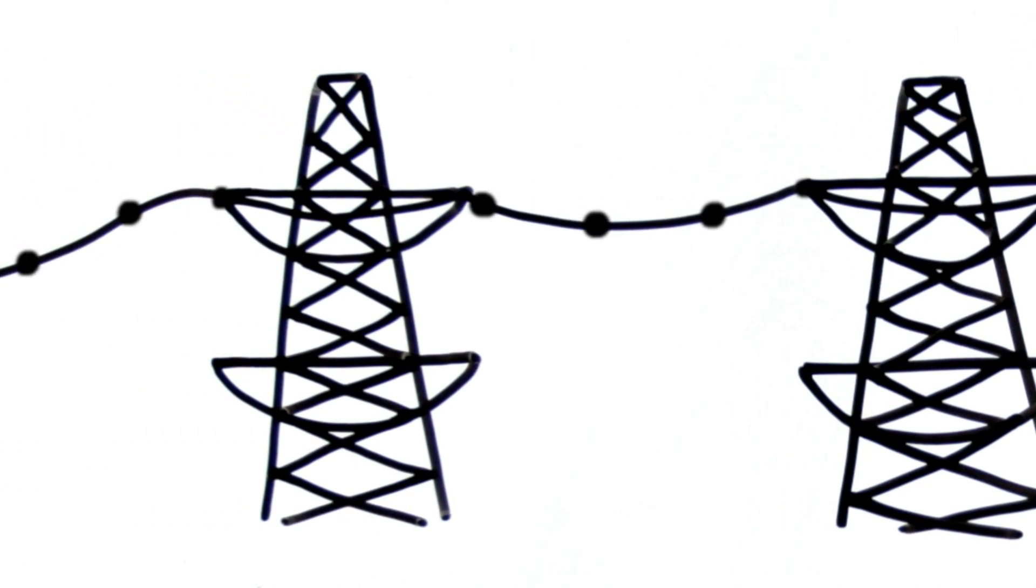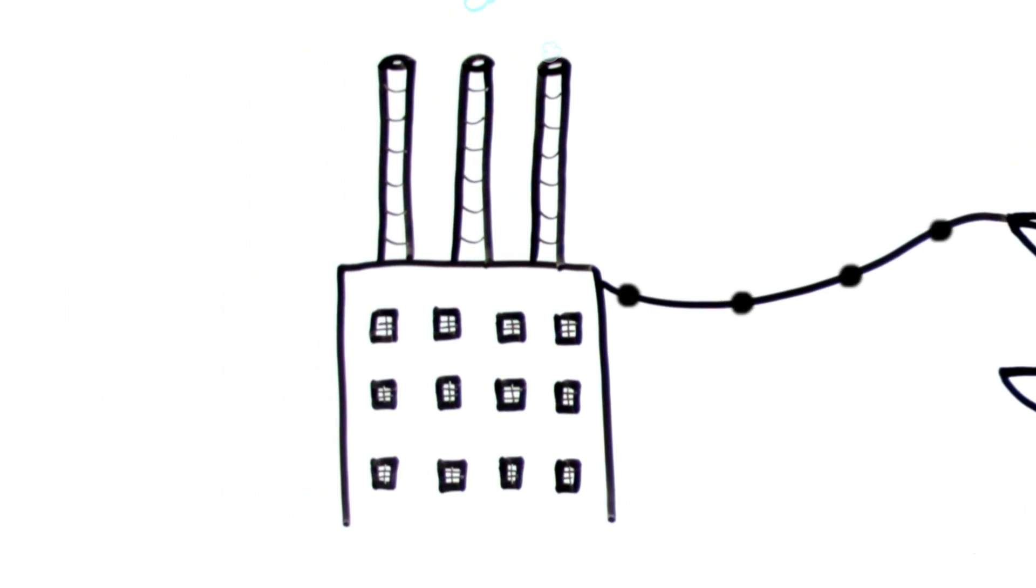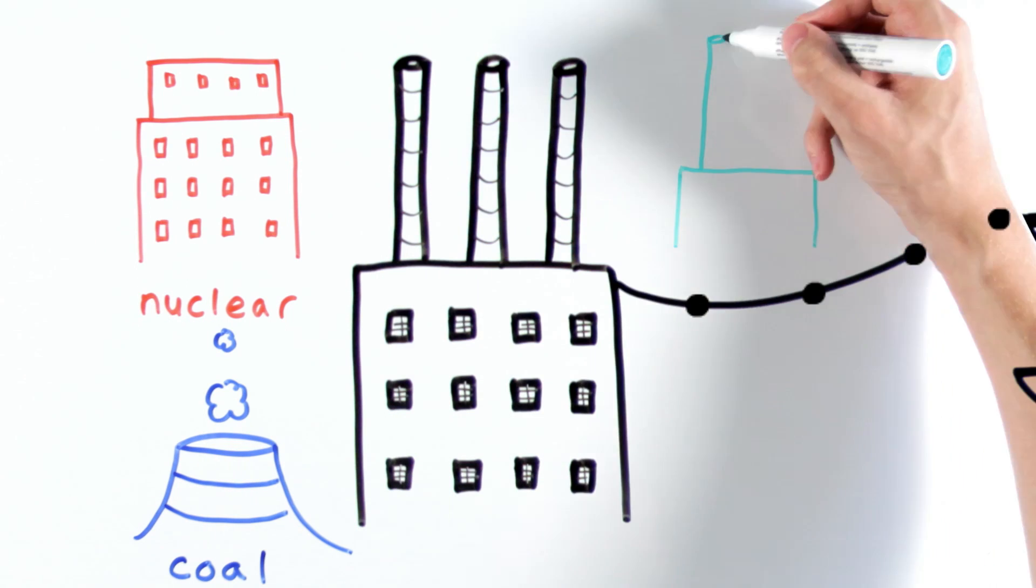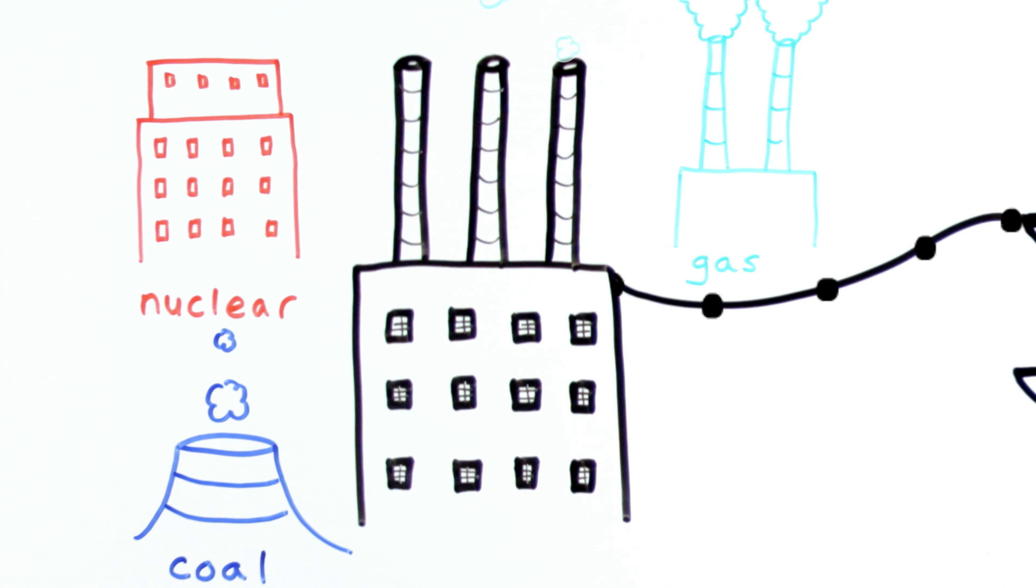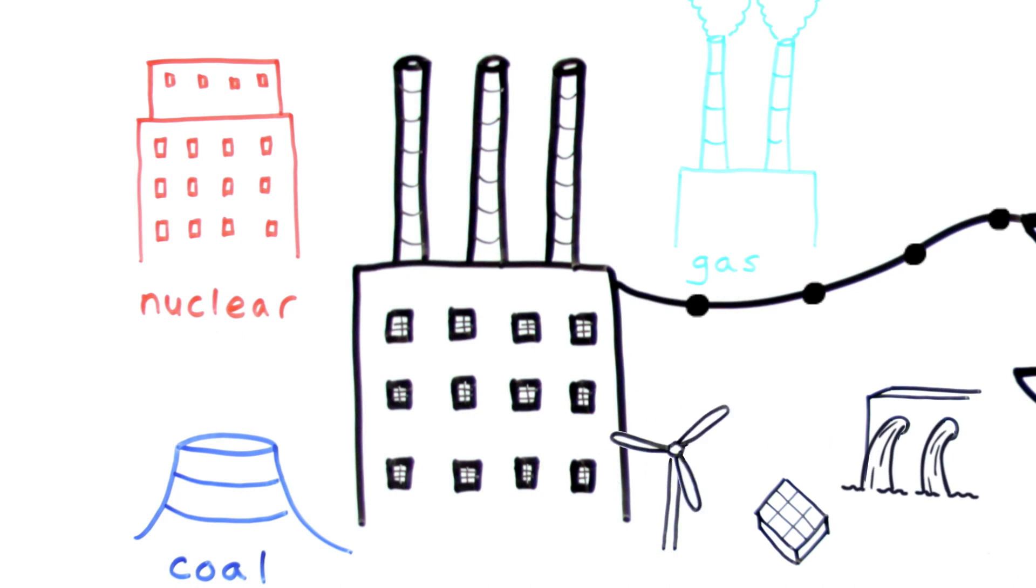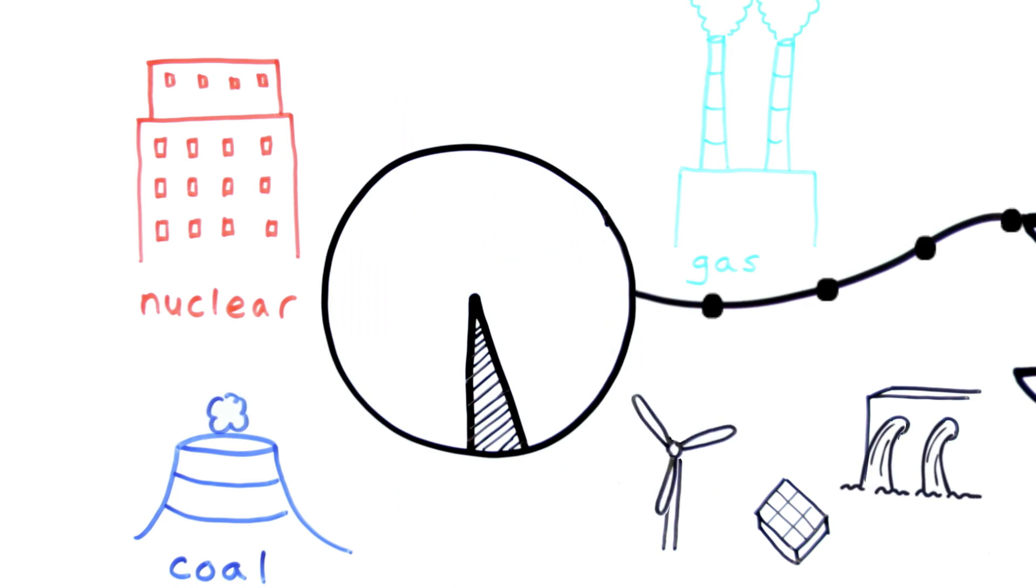But before any electricity can be transported, it's got to be generated. In the UK, there are quite a few ways this happens. But the main methods are nuclear, coal and gas. We do use some forms of renewable energy, like wind, solar and hydro. But currently, these only provide a fraction of our needs.